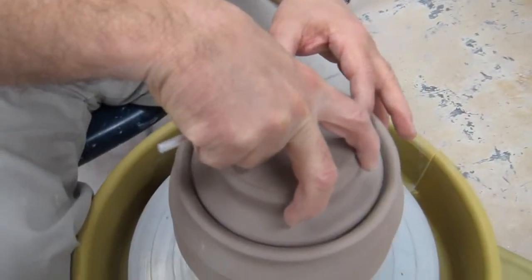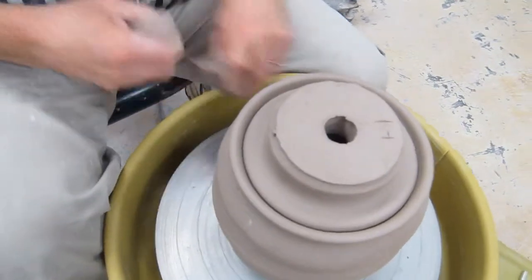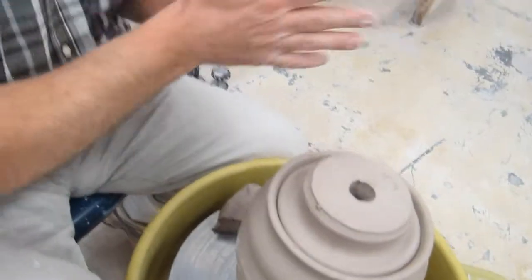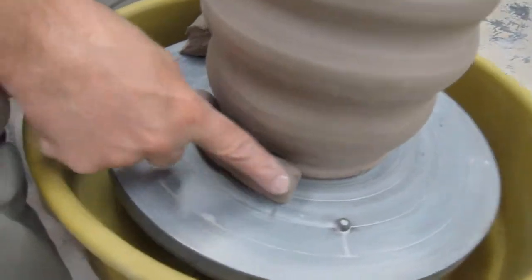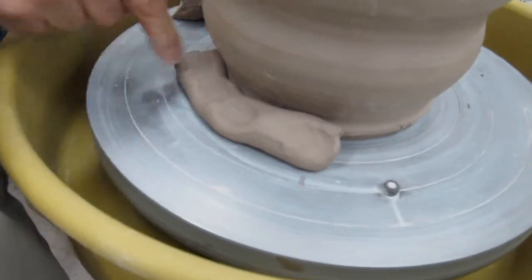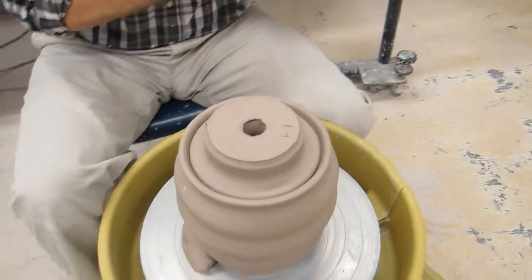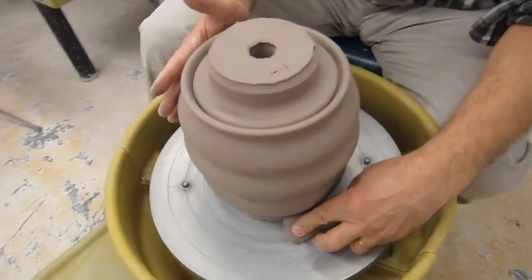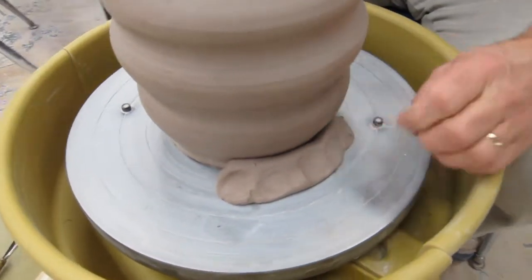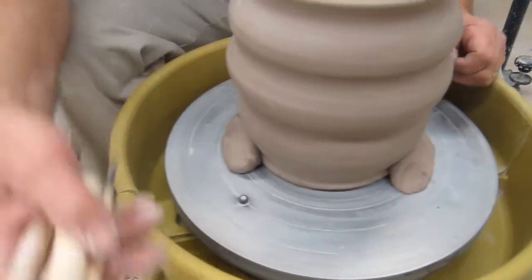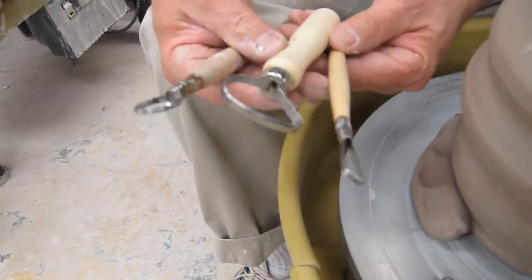We can set this lid into place. And with this technique we're actually using the jar as a chuck or a device to trim the lid. Right now I'm placing a clay coil at the base of the jar just to make sure it doesn't go anywhere so it stays still. I have an assortment of very basic trimming tools which I'll be using to trim with.